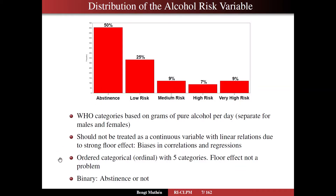It is perfectly appropriate to treat this variable as an ordered categorical ordinal variable with five categories. In that modeling framework, a floor effect is not a problem at all. We will also treat this variable as binary — abstinence or not — since that is a traditional way of looking at treatment effects, though treatment effects in terms of moving people from high risk to lower risk are also of interest.